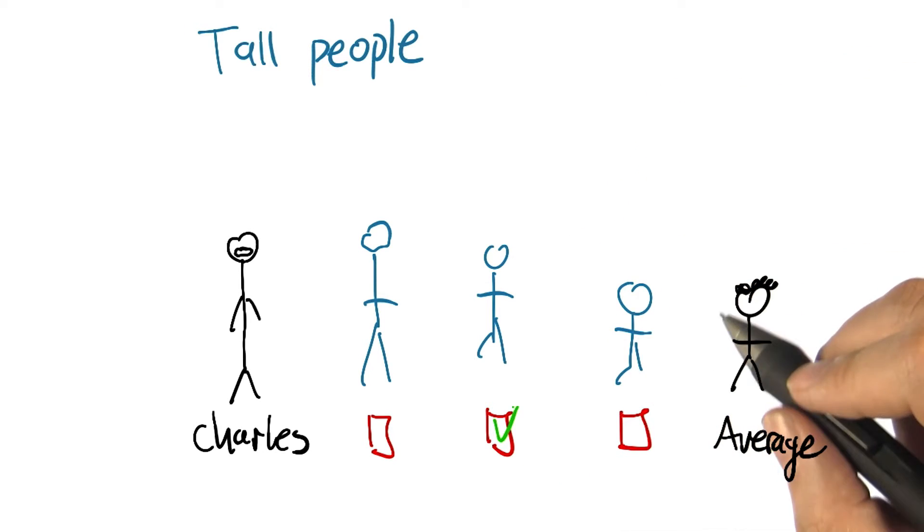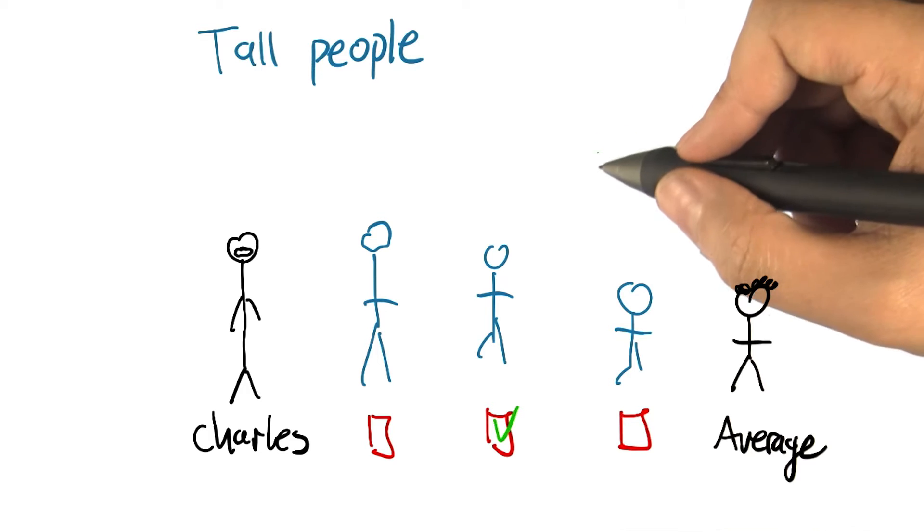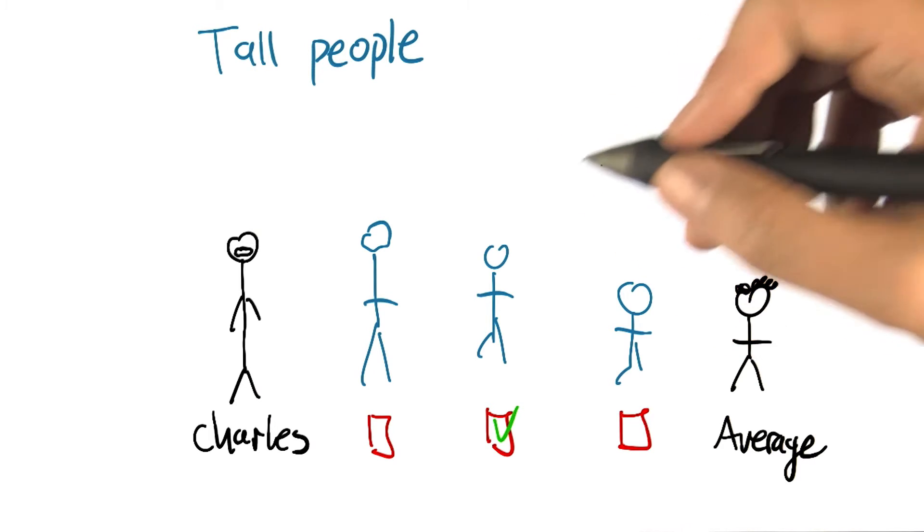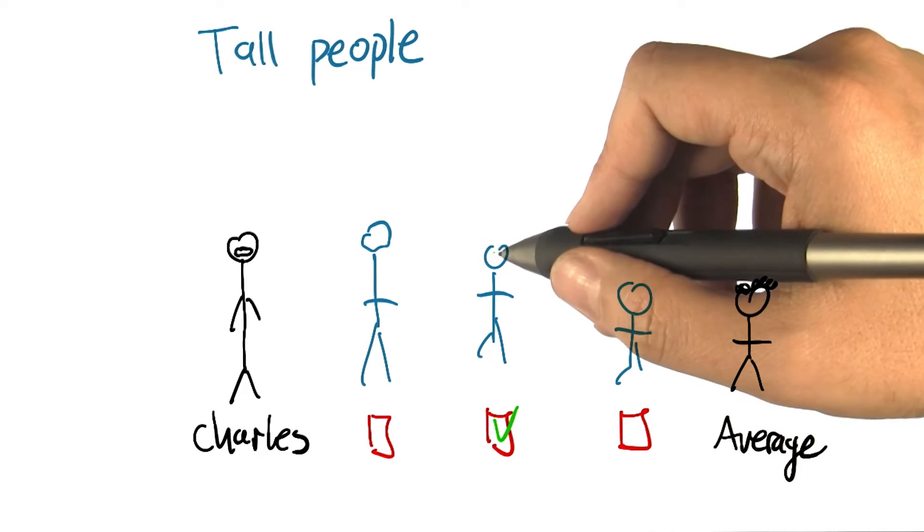So it turns out that if you actually do this, you measure people's heights and you measure the heights of their children, that is in fact what you tend to see.